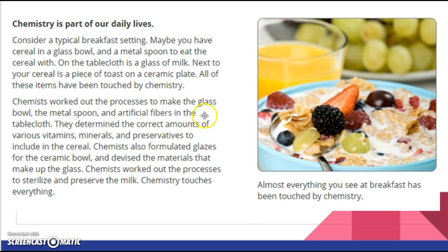They also mentioned you could talk about artificial fibers in the tablecloth. A lot of your clothing now is man-made. Talk about when you get your cereal. We've all seen the commercials where it says total 100% of vitamins and minerals, right? So they have to have certain amounts of vitamins and minerals so that it's healthy, so that it's enough that it matters, but not too much that it makes you sick.